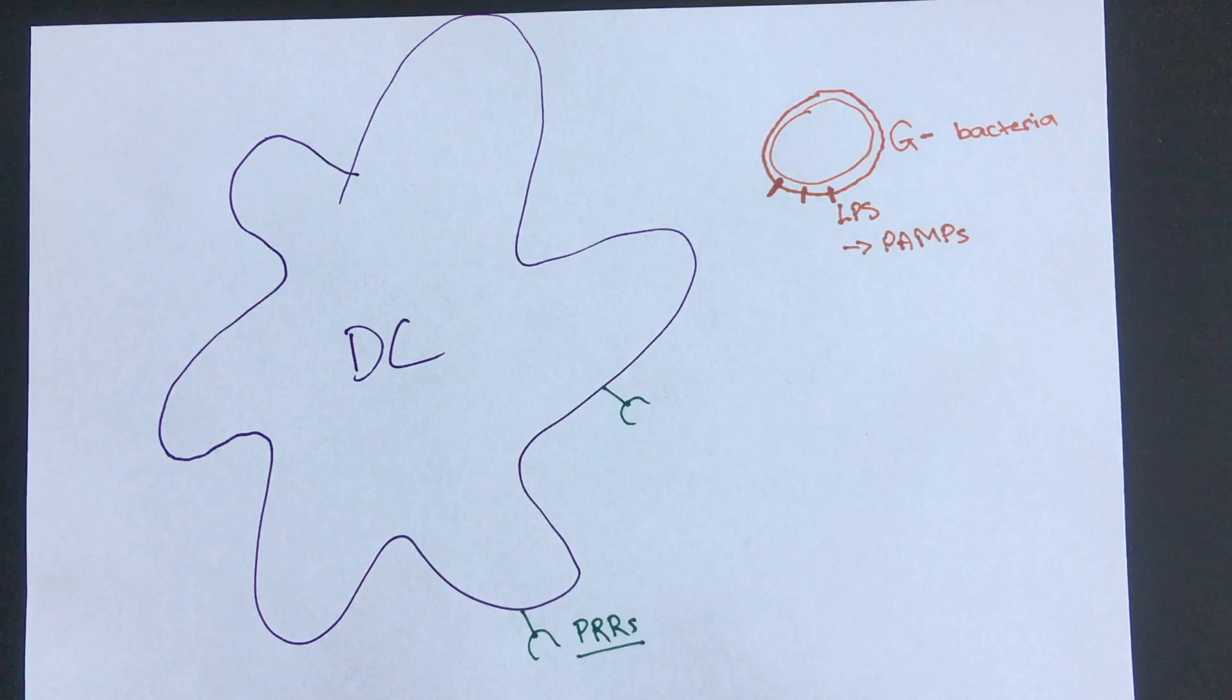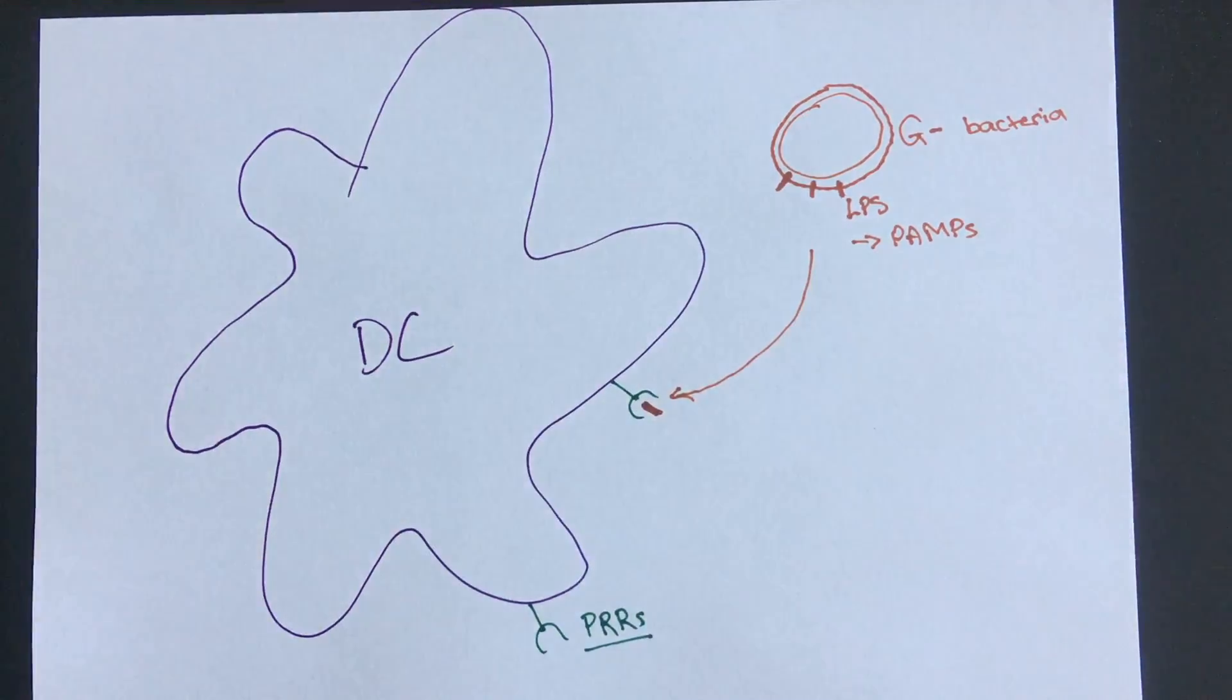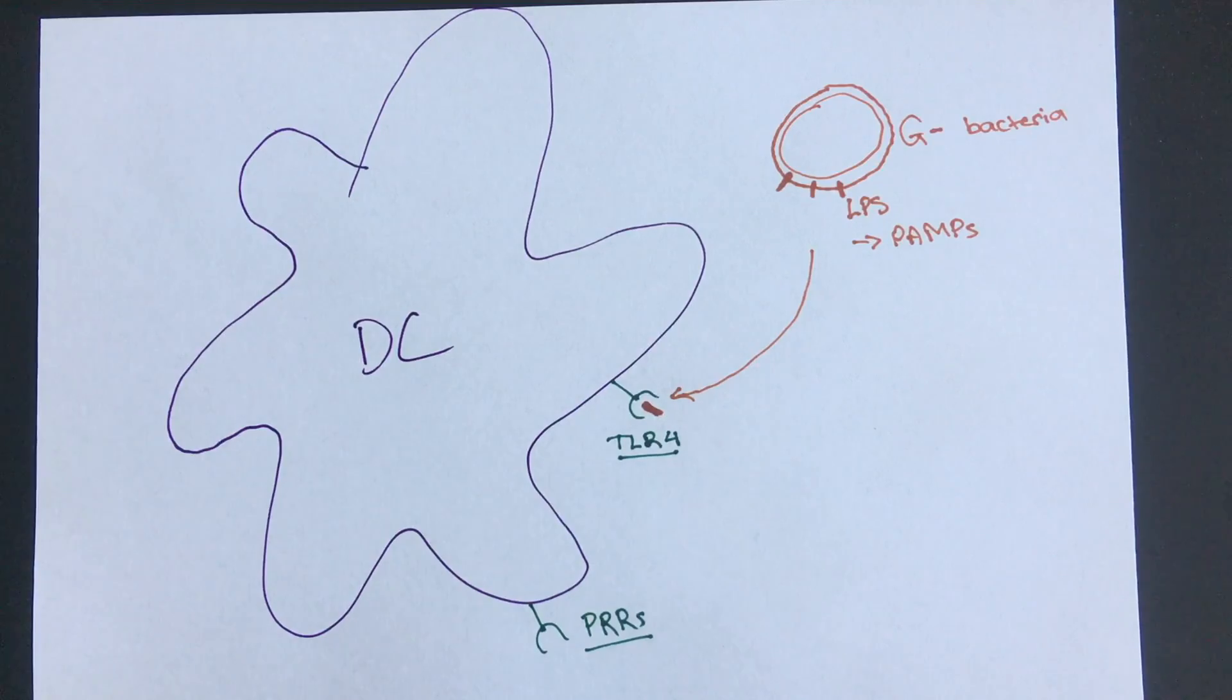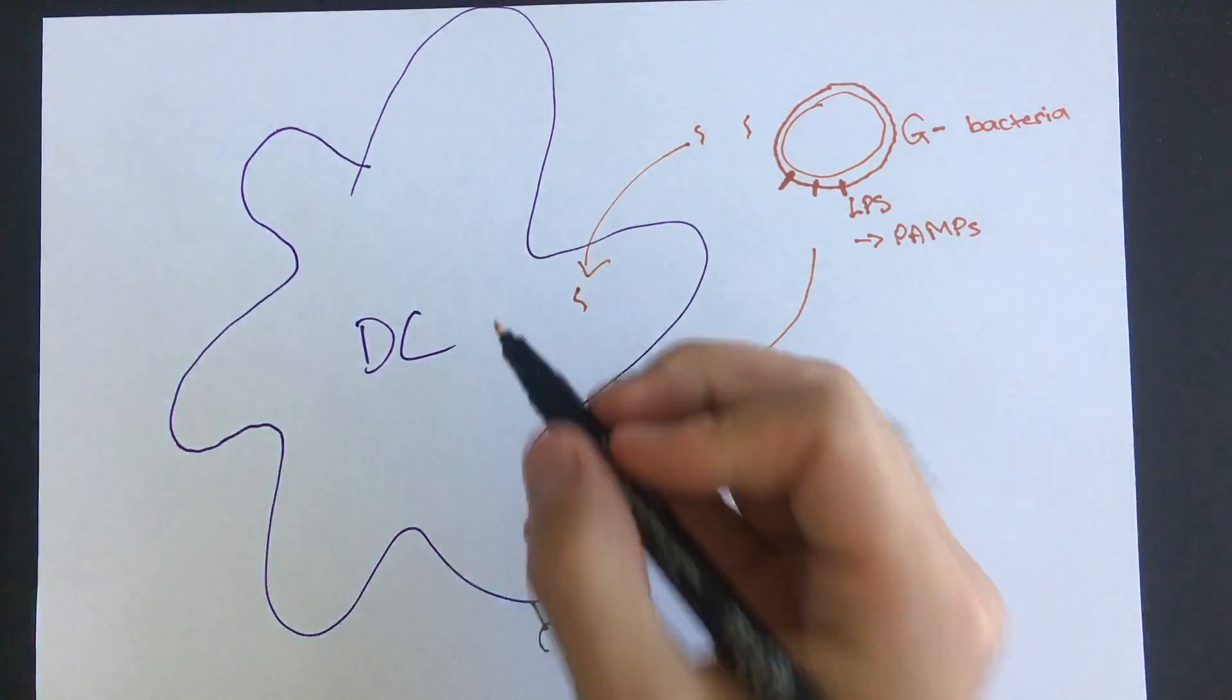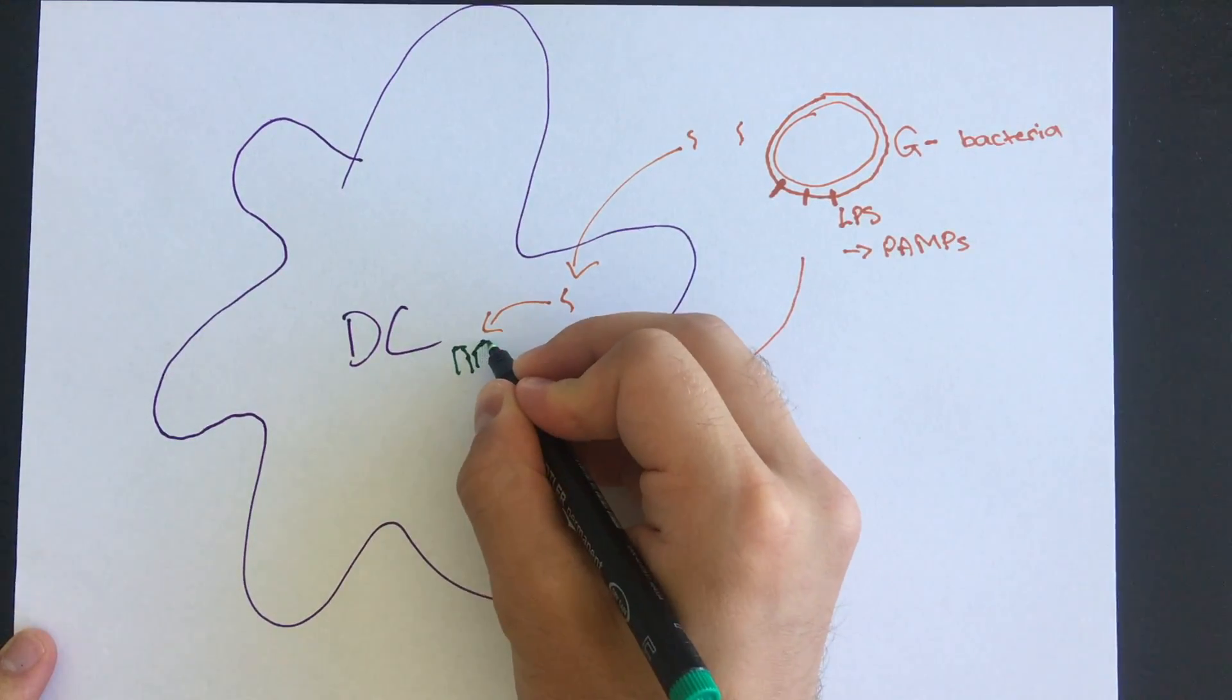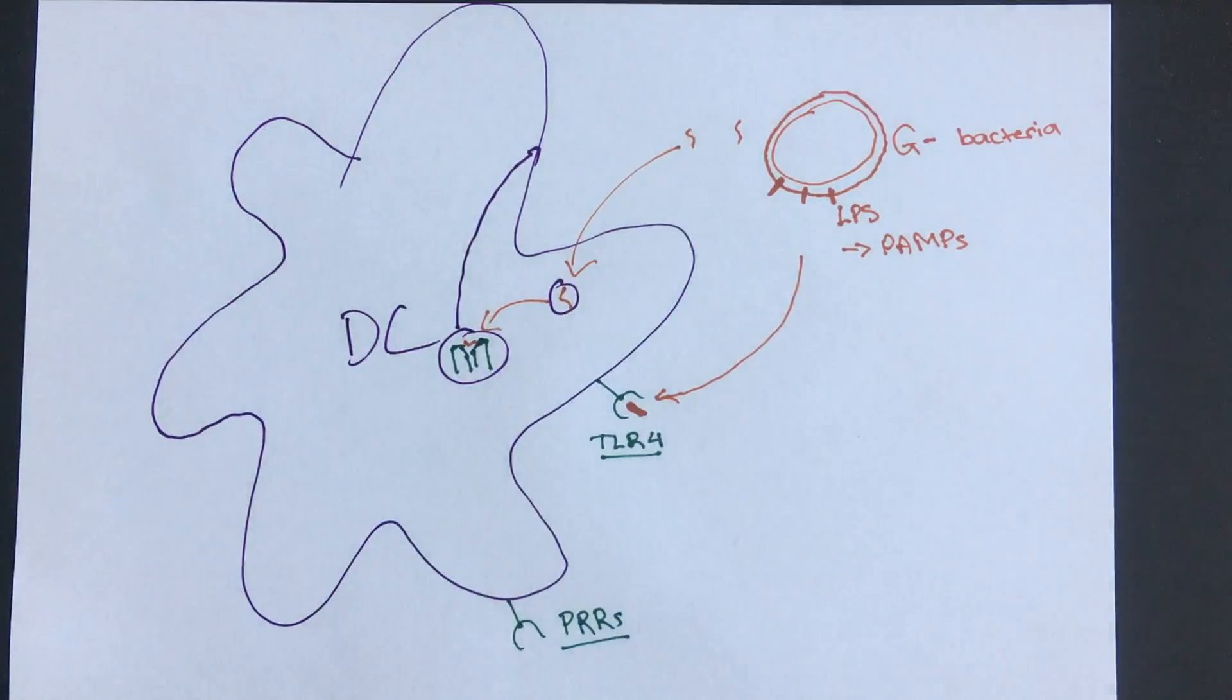So LPS from the bacterial outer membrane can bind the PRR on a dendritic cell. In this case the PRR is toll-like receptor 4. Once this happens, the dendritic cell matures and prepares to present antigens to T cells. Peptide antigens from the invading bacteria, which were originally extracellular, are endocytosed by the dendritic cell, they combine with MHC class 2, and then are presented on the cell surface.